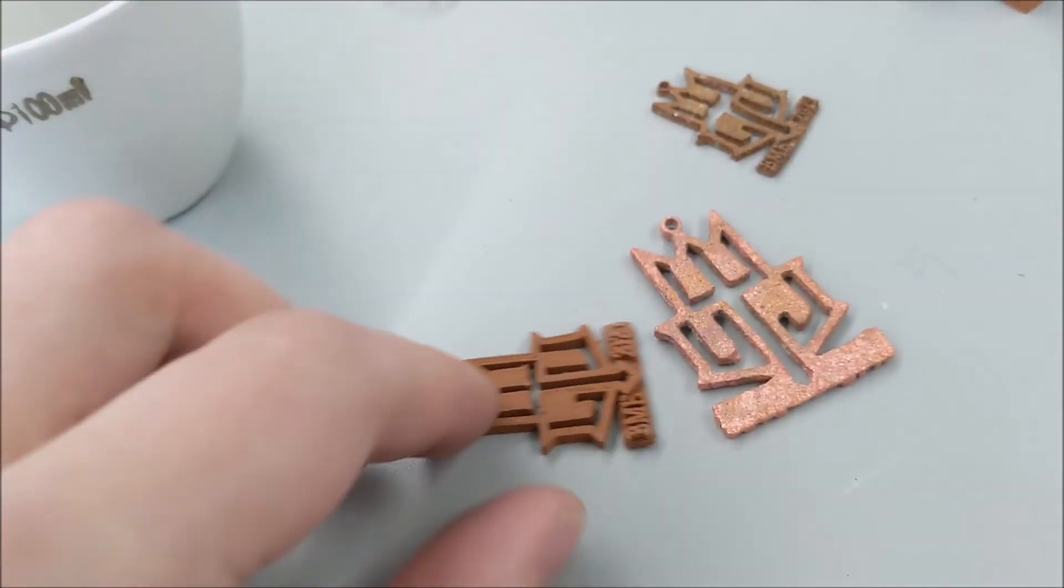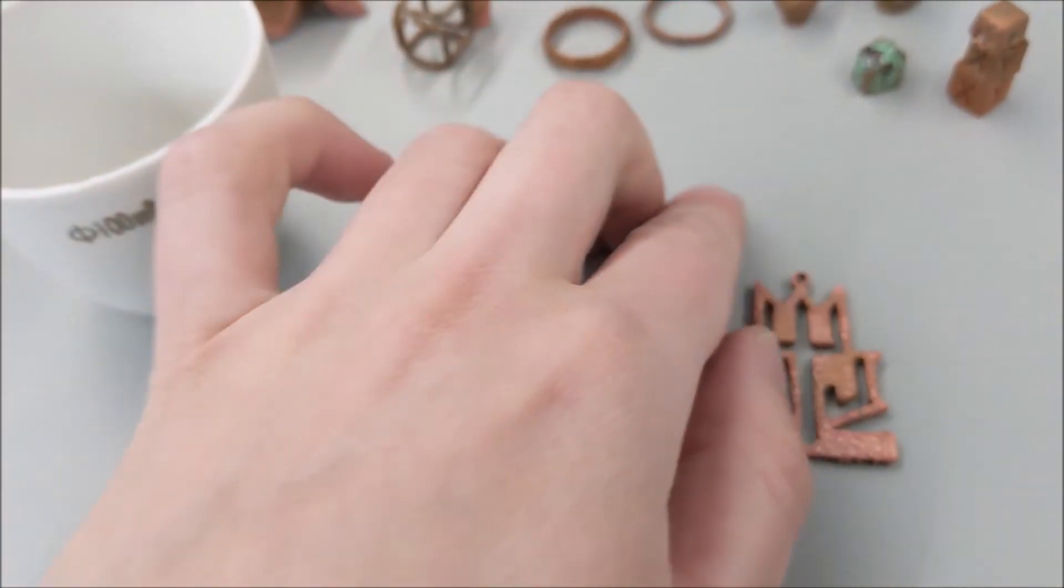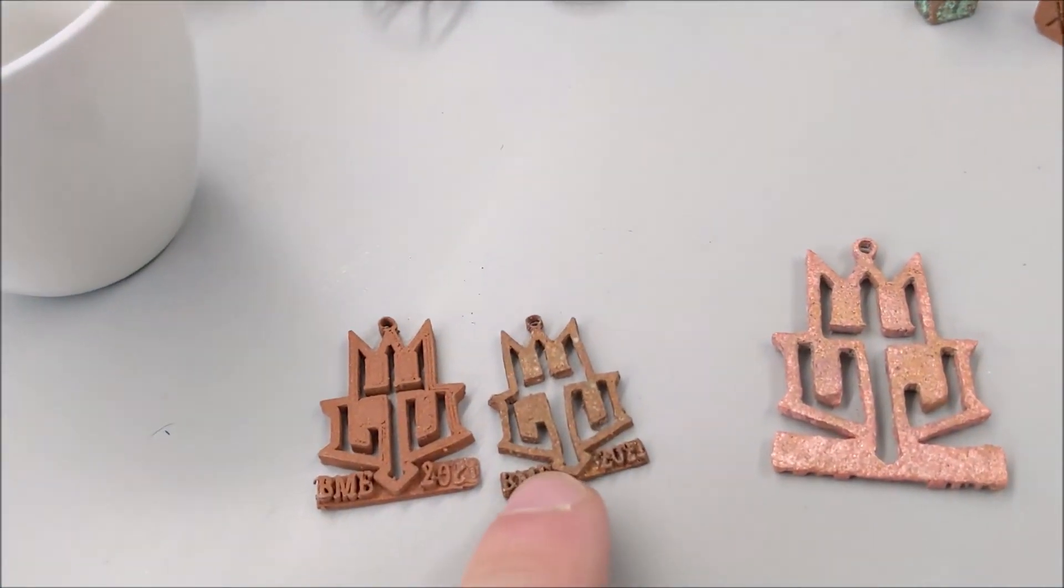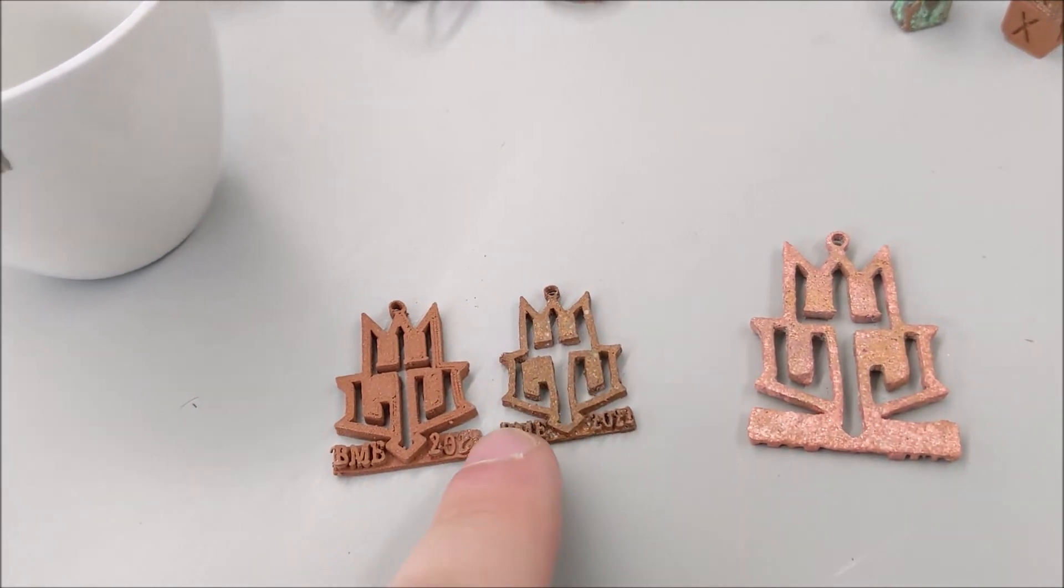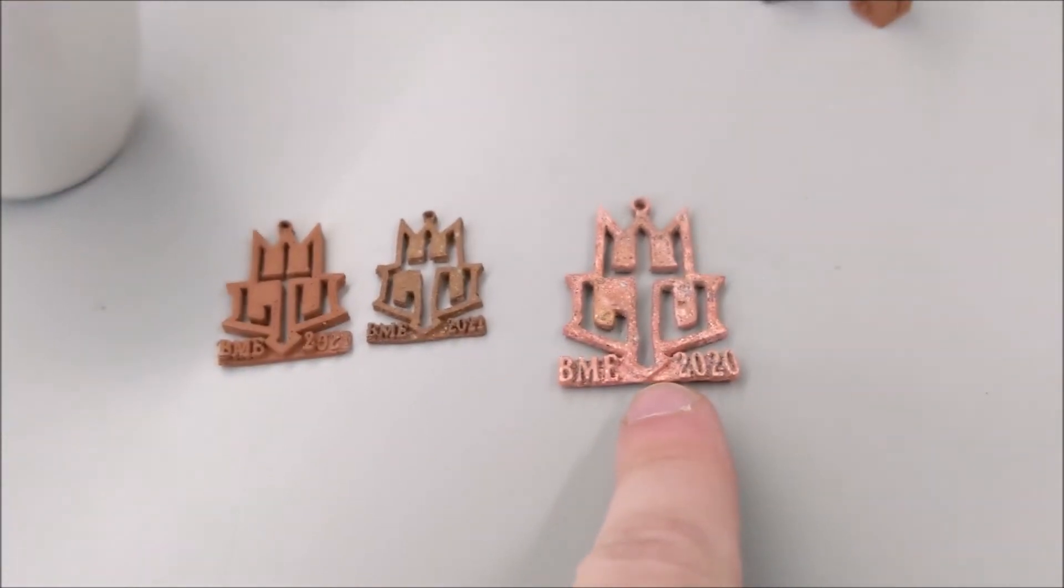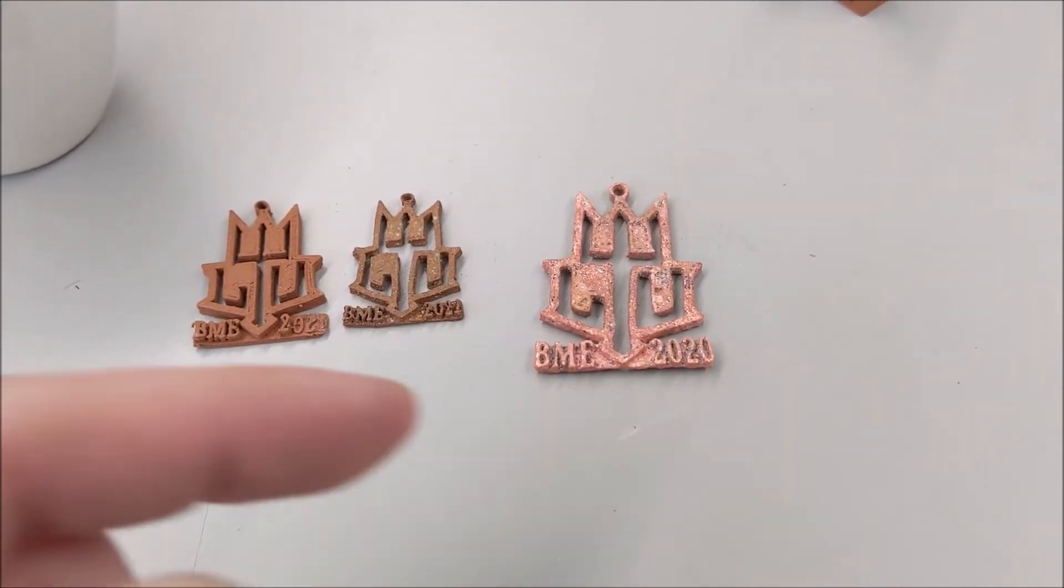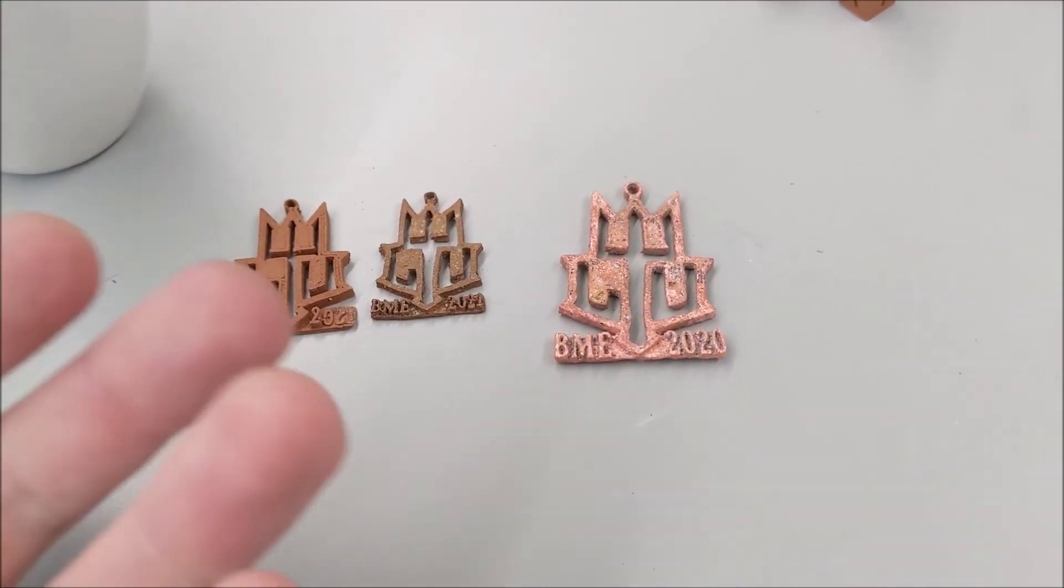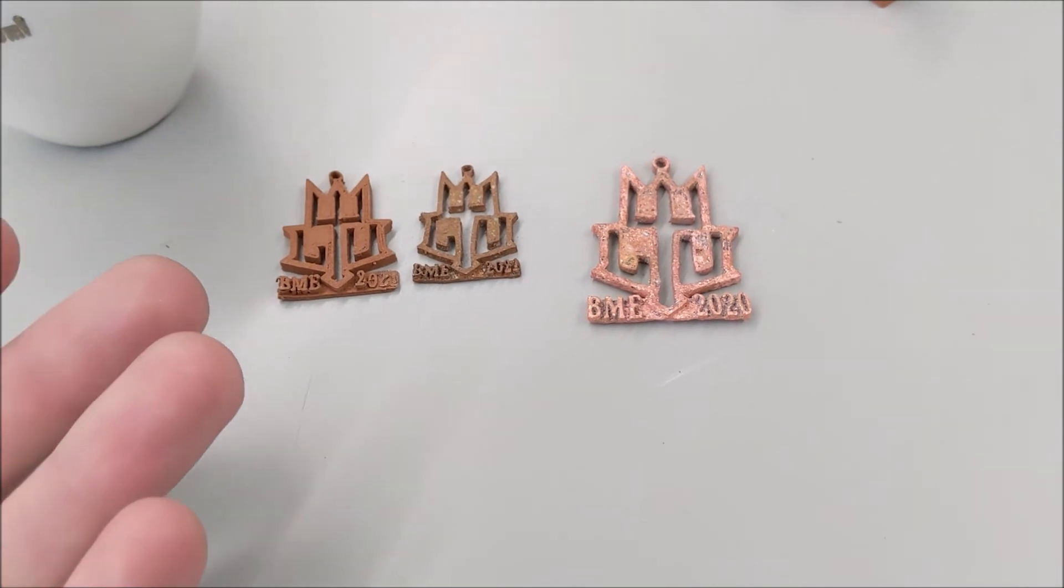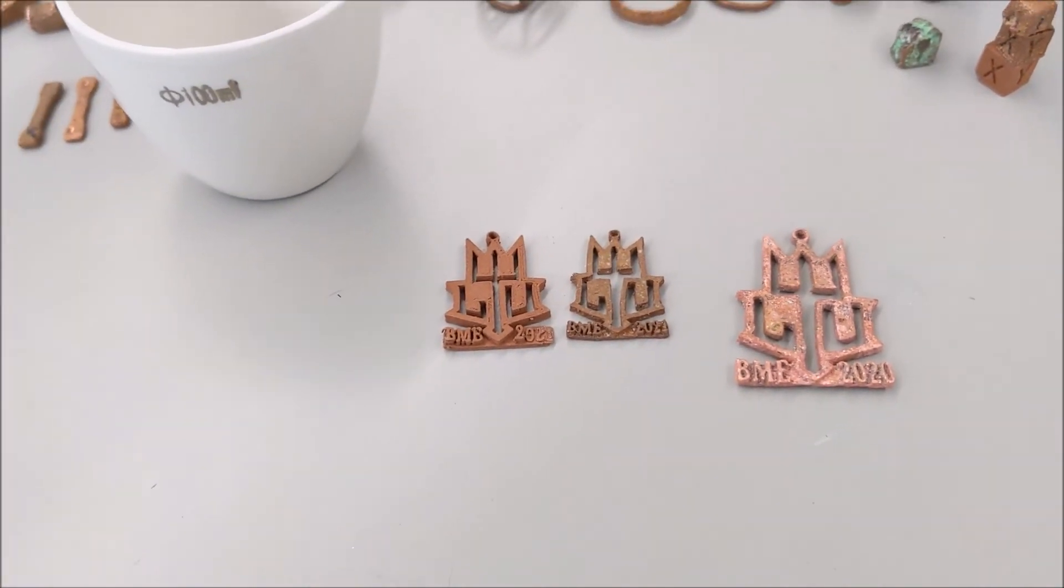So here's an example of an unsintered part. A sintered part that's been sitting out for several weeks. And then this is a freshly washed sintered part. So as we can see, it does age quite a bit. It's copper, just like a penny in your pocket. If you put these in a sealed atmosphere, probably they'll stay for longer. But it's not something you should rely on.